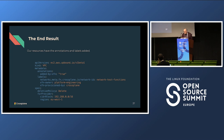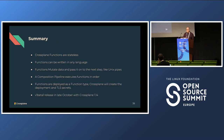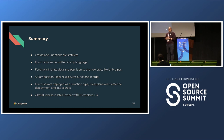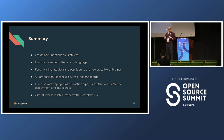In summary: Crossplane functions are stateless — they don't store any state. They can be written in any language. They're designed to mutate data and let other systems do the work. A composition pipeline executes things in steps, which is a little new for Kubernetes since it's been declarative. When you deploy a function, Crossplane handles all the gRPC machinery, and the SDK helps you. The V1 Beta 1 release will be in late October with Crossplane 1.14 — you can play with it today, but this will be a big announcement.